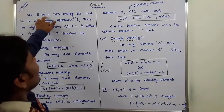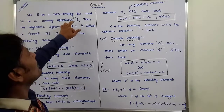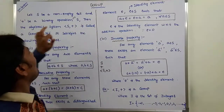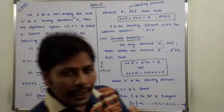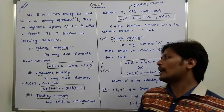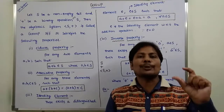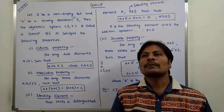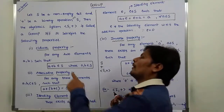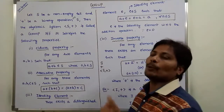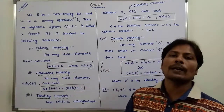Let S be a non-empty set and plus be a binary addition operation performed on the non-empty set S. Then the algebraic system (S, +) is called a group if and only if it satisfies the following properties. The first one is closure property. For any two elements a, b belonging to S, a plus b also belongs to S.